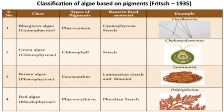Classification of algae is based on pigments, with five classes: blue-green algae (Cyanophyceae), green algae (Chlorophyceae), brown algae (Phaeophyceae), and red algae (Rhodophyceae). The pigments are phycocyanin, chlorophyll, fucoxanthin, and phycoerythrin respectively. Their reserved food materials are cyanophycean starch, starch, laminarin with mannitol, and floridean starch.